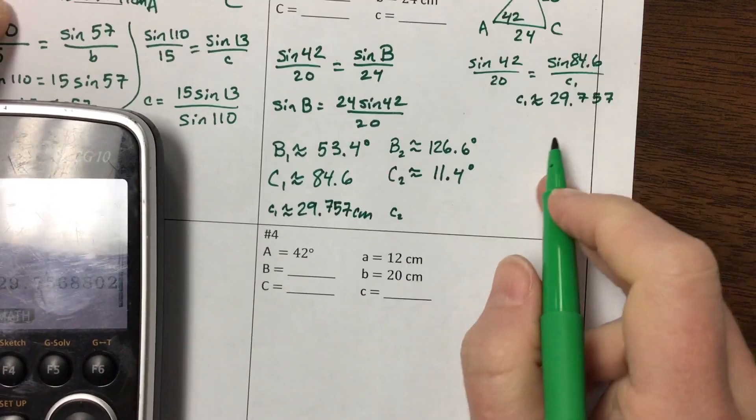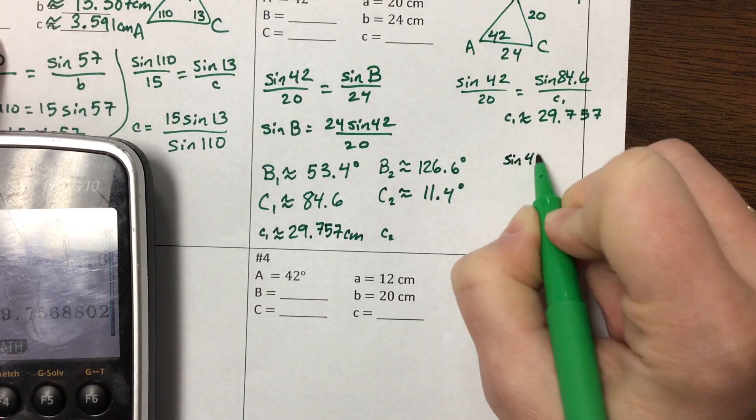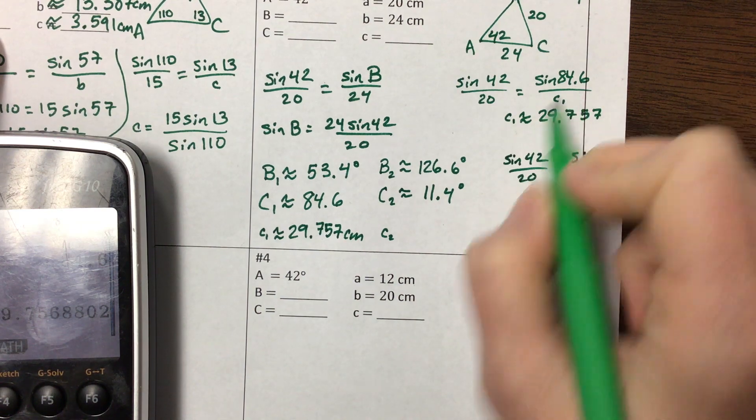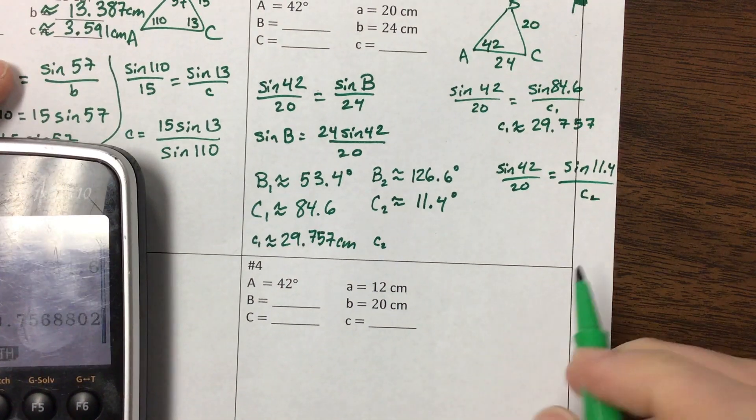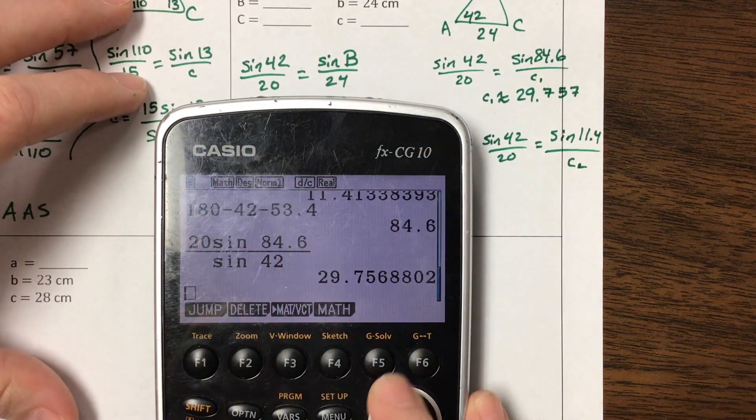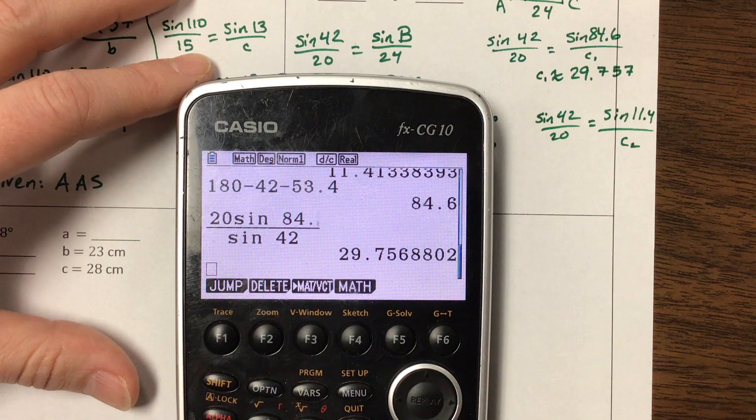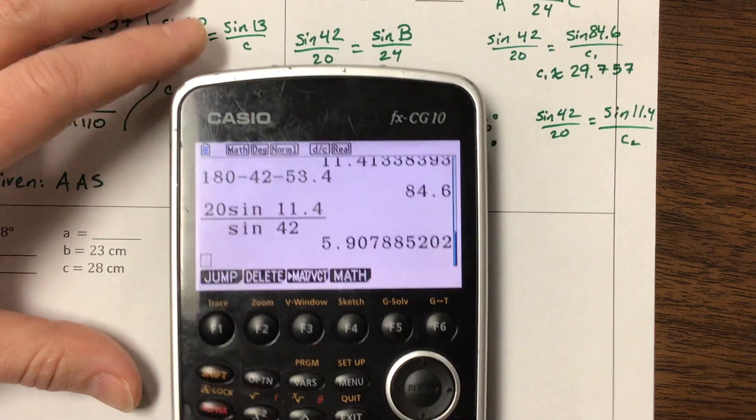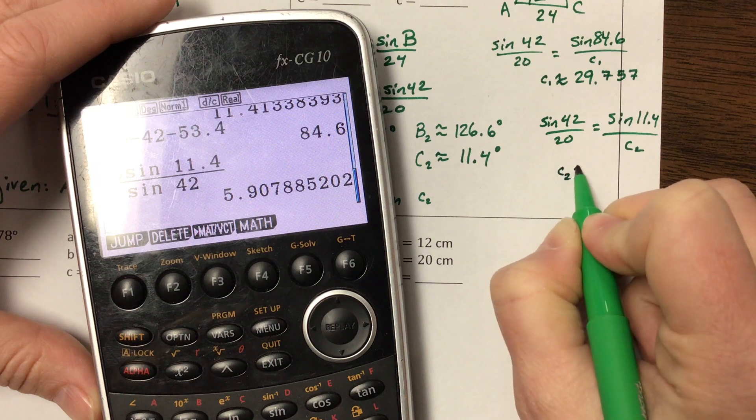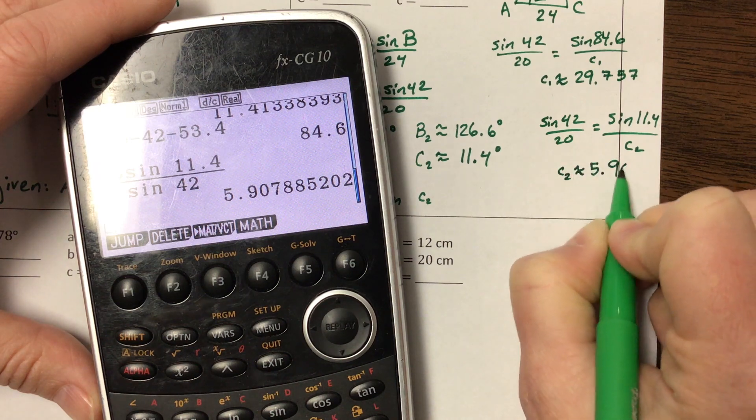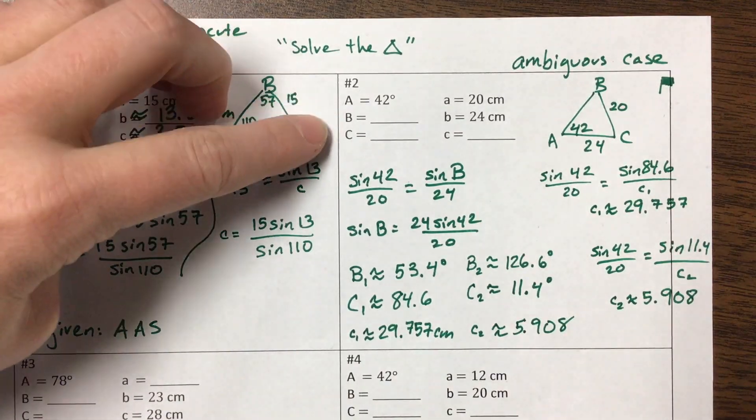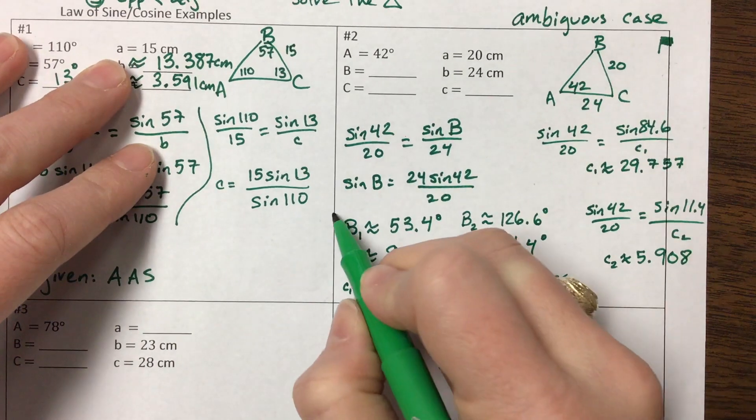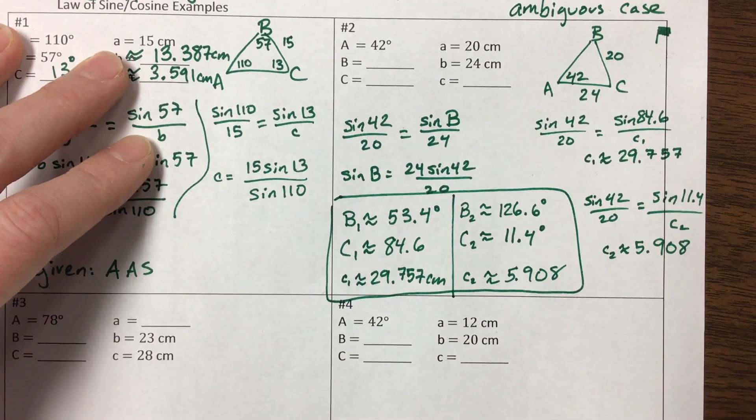Okay, so little c1 is about 29.757 centimeters, and then I need to find little c2. So it would be sine of 42 over 20 is equal to sine of big C2, 11.4, over little c2. It's hard to tell my bigs and my littles, but okay. So basically that's that exact same thing, except instead of the 84.6, I now have 11.4, and so I find that little c2 is about 5.908. Okay, and so on a problem like this, I might not tell you that you needed to come up with two answers in each blank, but you do, okay, because this is the ambiguous case, and it had two distinct triangles.